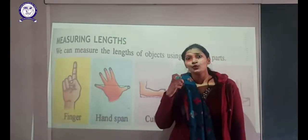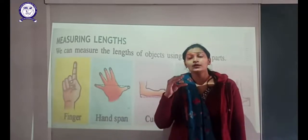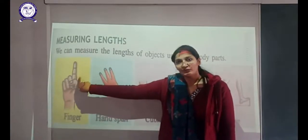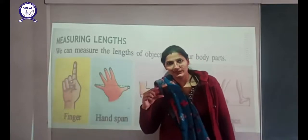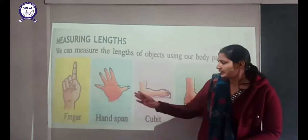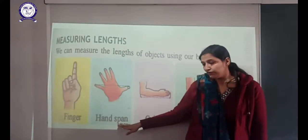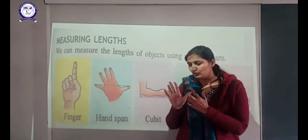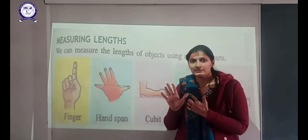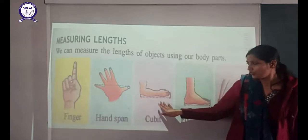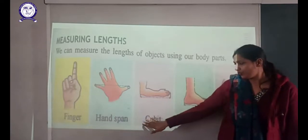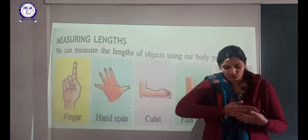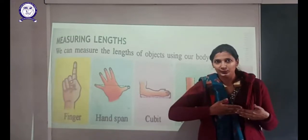If we want to measure the length of a small matchbox, we can use our finger. Next is hand span — if we want to measure the length of a pencil, we can use our hand span. Next is cubit — if we want to measure the length of a file, we can use our cubit.